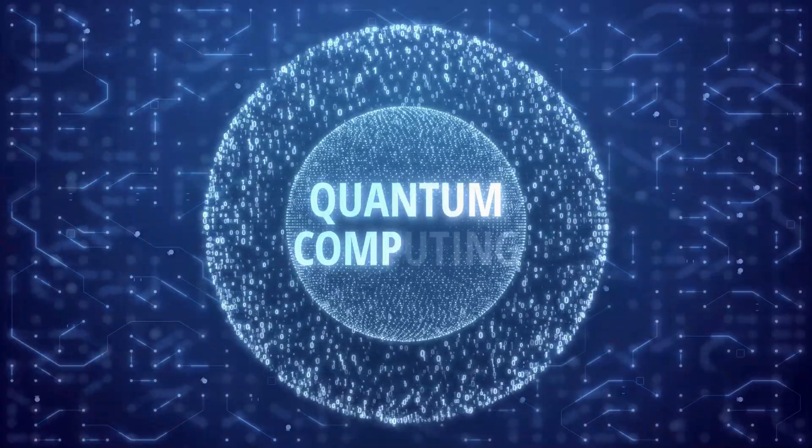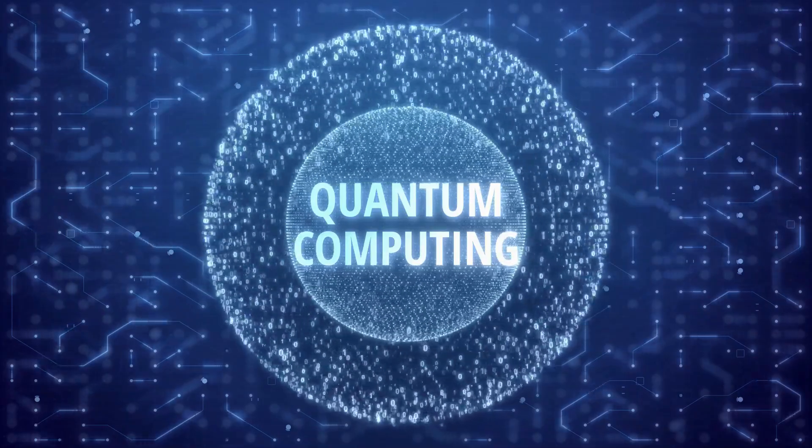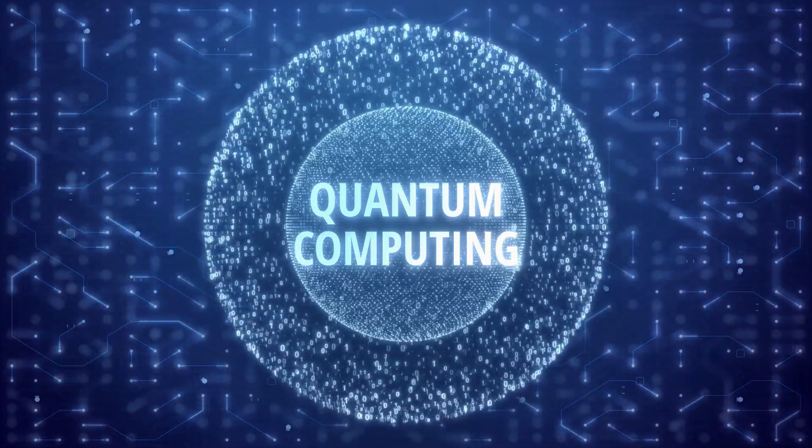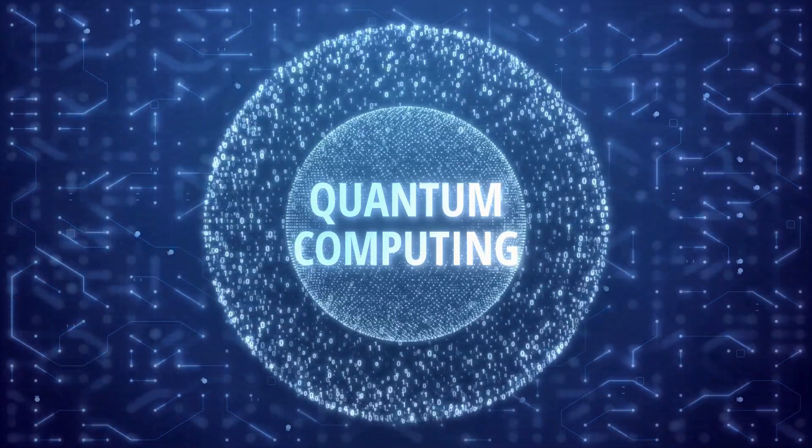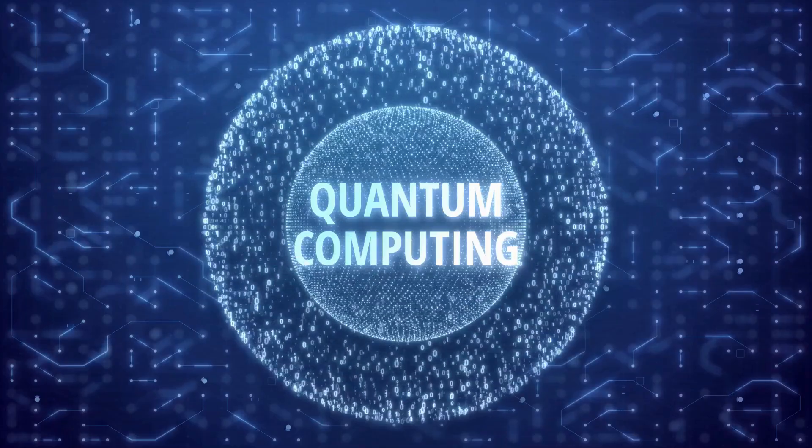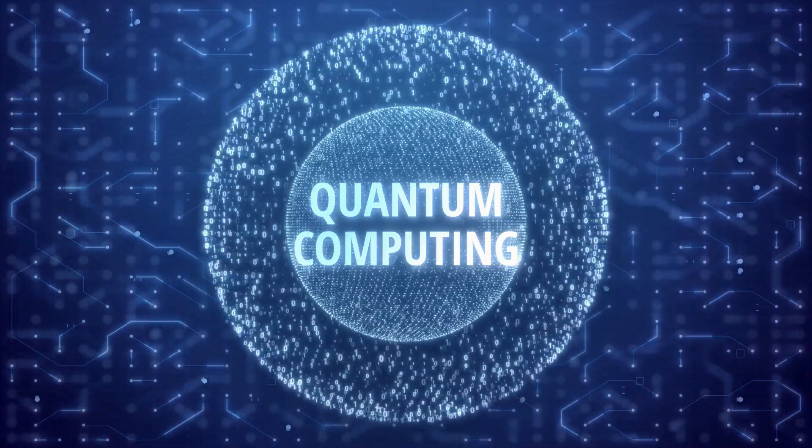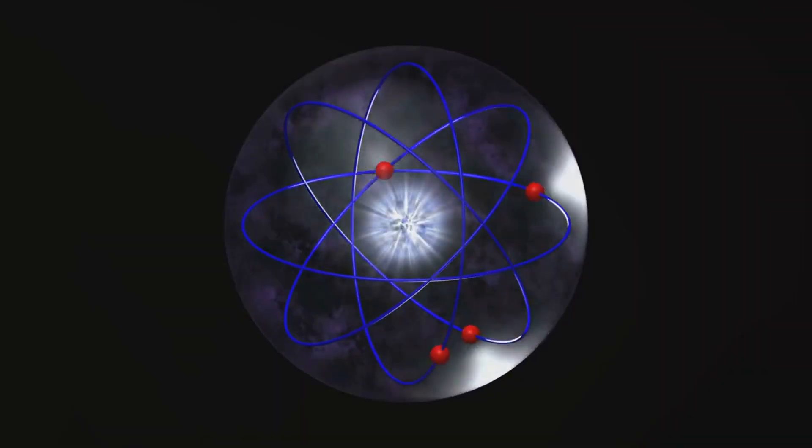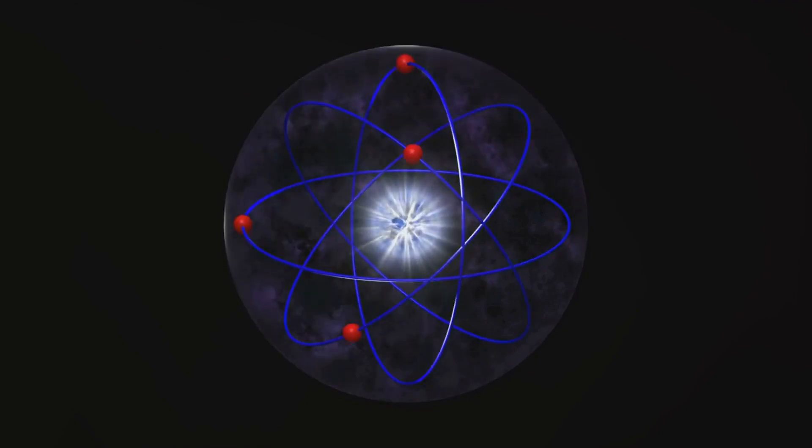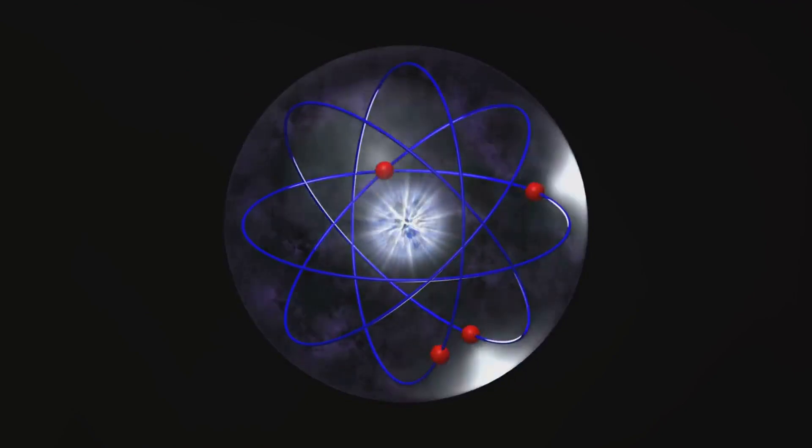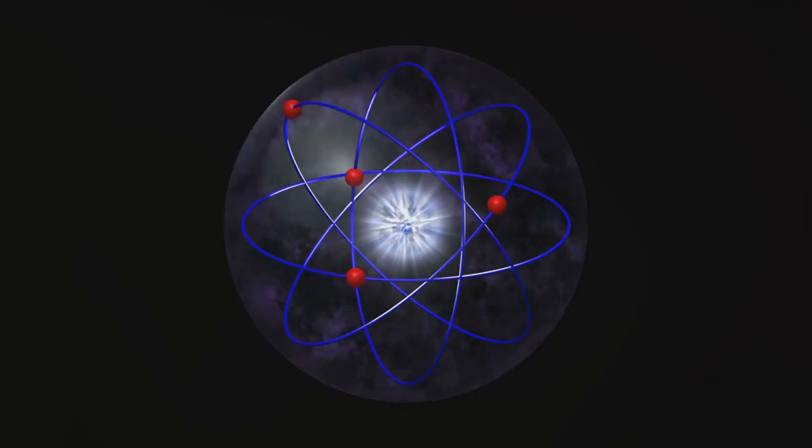In essence, quantum superposition is a game of probabilities. It's a dance of possibilities, where particles exist in all their possible states at once, only choosing a definite state when observed. So if you thought an atom was just a tiny speck of matter, think again. It's a hub of quantum activity, a spinning top of possibilities.